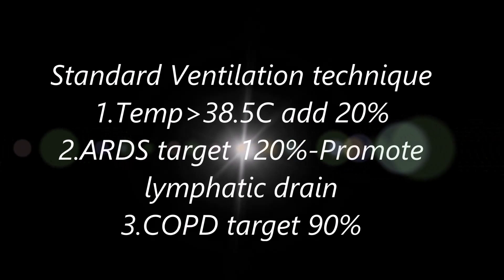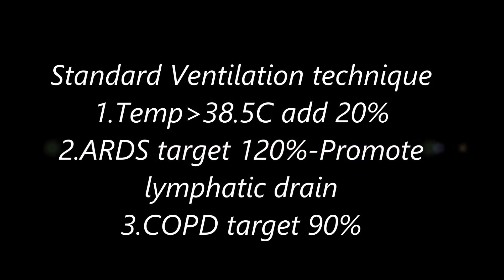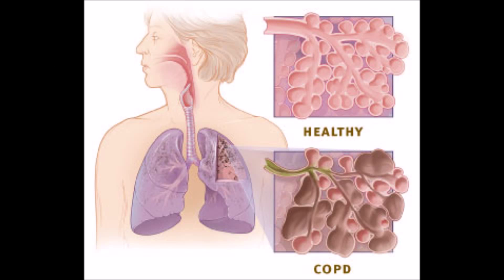Some general guidelines: you would have your minute volume percent at 120% for temp craving 38.5, since they're making more CO2 and they need more ventilation. ARDS might go at 120, so then it's promoting lymphatic drainage, and COPD at 90%, because they don't need as much.